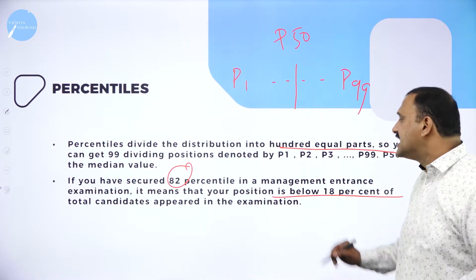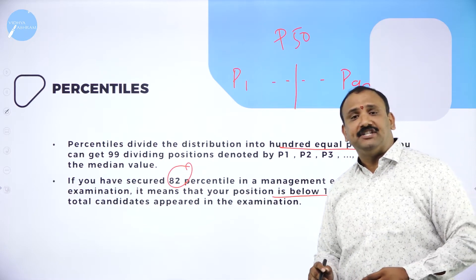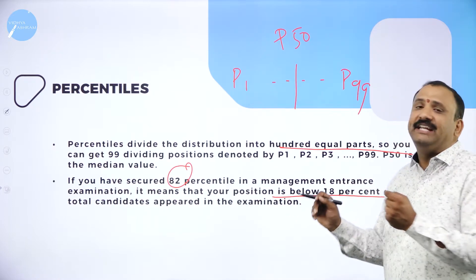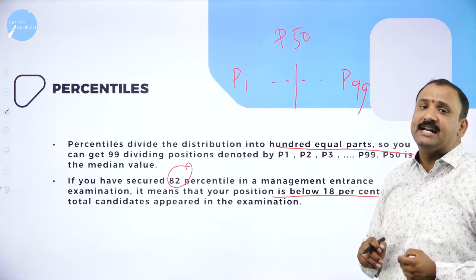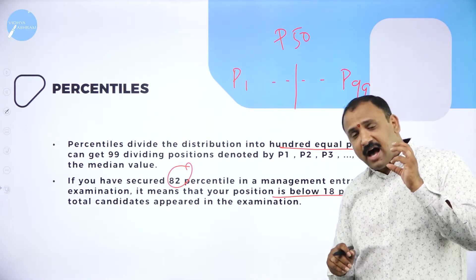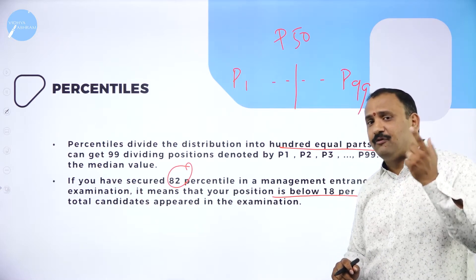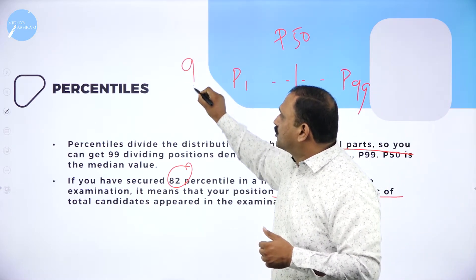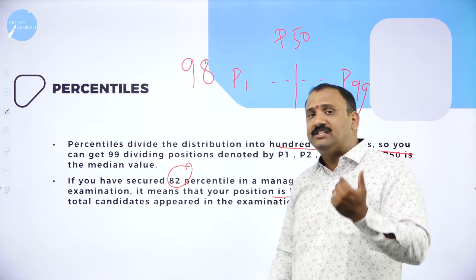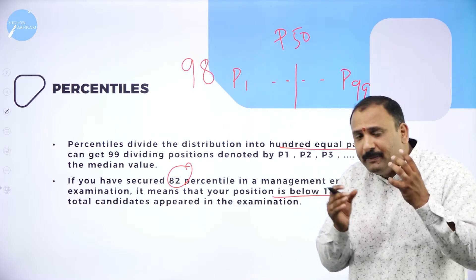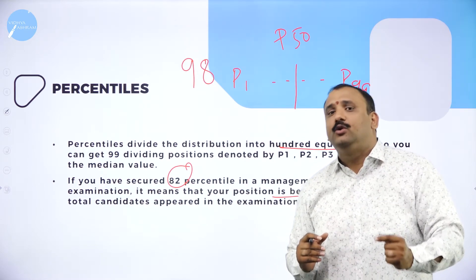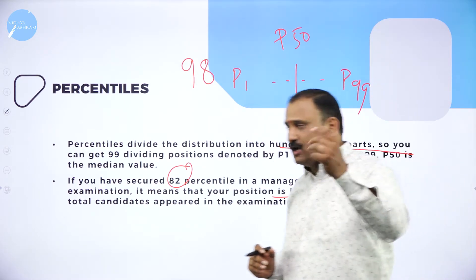Scoring 82 percentile means you are in the top level — there are only 18% of candidates above you. This is how you will be judged in a percentile ranking. For example, in the GMAT exam, if you scored 98 percentile, there are only 2% above you. That's how you understand the importance of percentile as a statistical tool in economics.